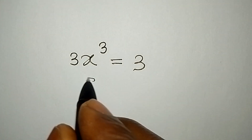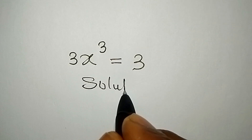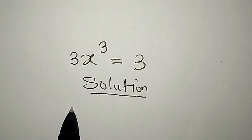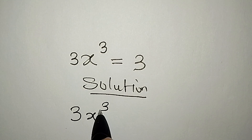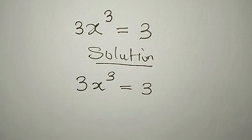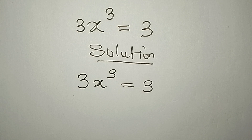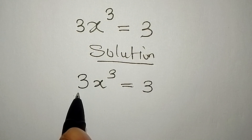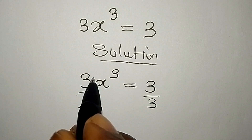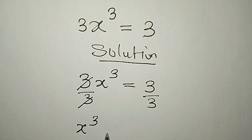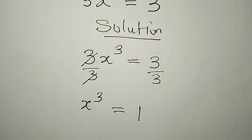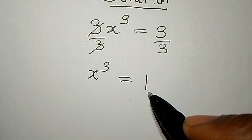Hello everyone. Let's find the three solutions to this problem: we have 3x³ = 3. The first step is to divide both sides by 3, so x³ = 1, because 3 over 3 gives 1.